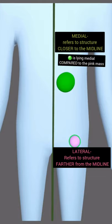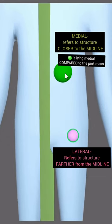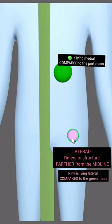Since the green mass is closer, it is lying more medial compared to the pink mass, and the pink mass is lying lateral to the green mass.